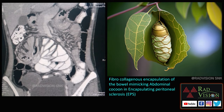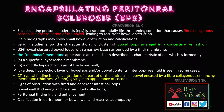Our main intention is to describe EPS and its differential diagnoses, imaging features, and treatment. Encapsulating peritoneal sclerosis is a life-threatening condition causing fibrocollagenous encapsulation of the bowel, which may lead to recurrent bowel obstruction. Plain radiographs may show bowel obstruction and calcification. Barium studies typically show a concertina-like fashion arrangement of bowel loops. Ultrasound may reveal the trilaminar membrane.